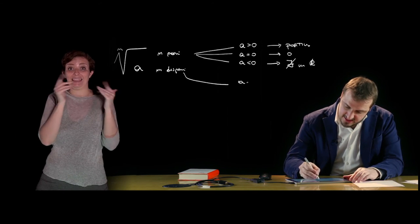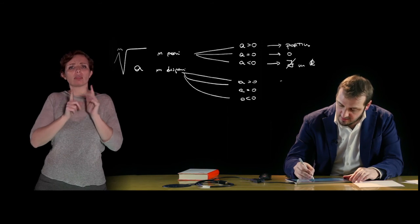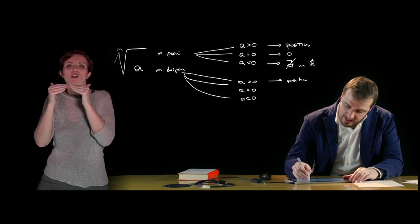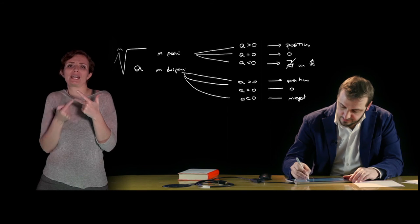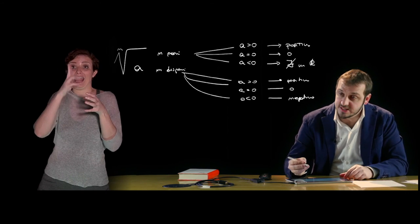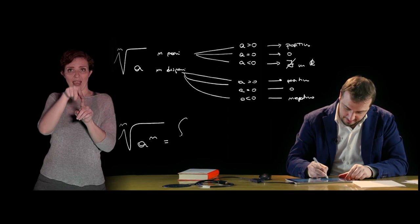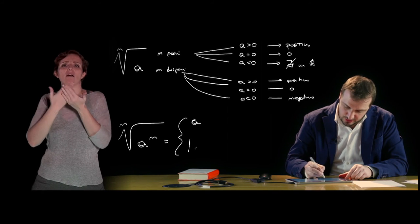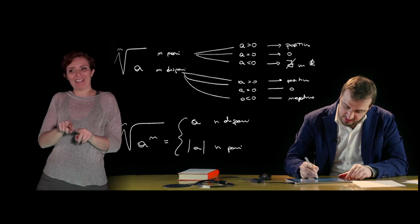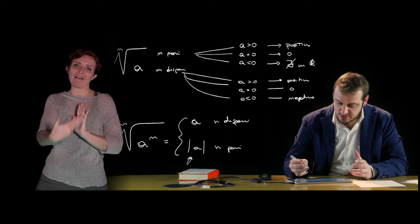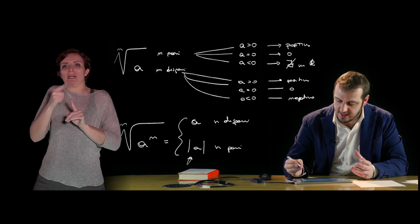If n is odd, the three cases a > 0, a = 0, and a < 0 give respectively a positive number, zero, and a negative number. In ℝ, the existence domain of the radical is defined accordingly: the nth root of a to the n equals a if n is odd, or equals the absolute value |a| if n is even. The concept of absolute value will be covered later; for now it simply means the number without its sign — always a non-negative quantity.